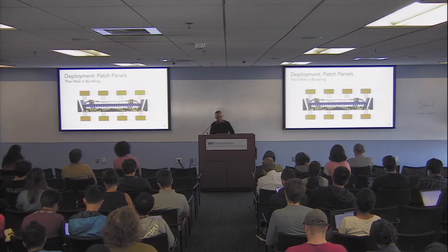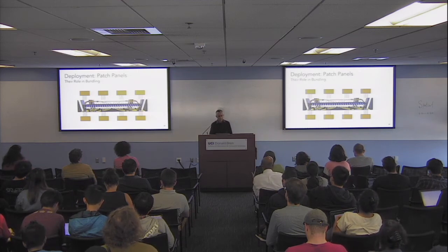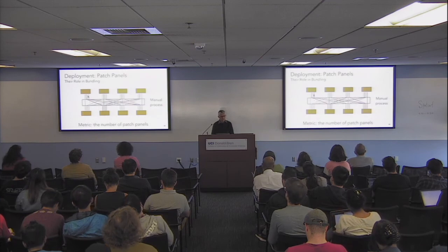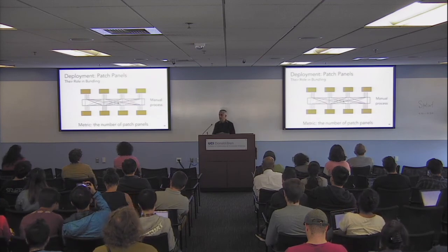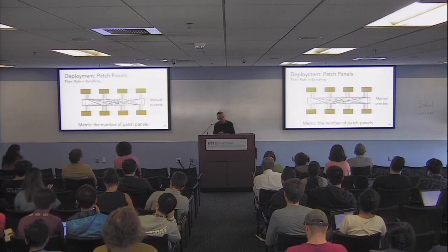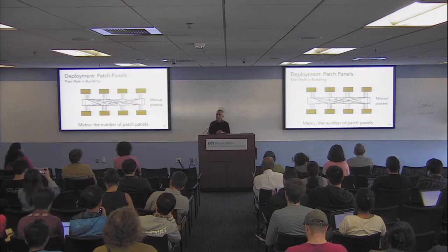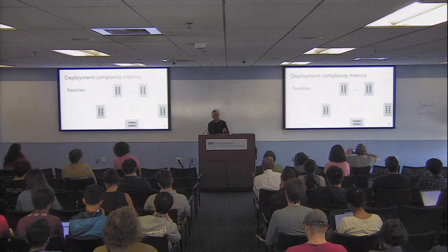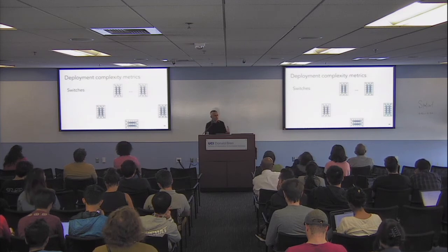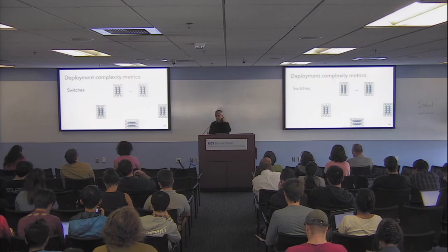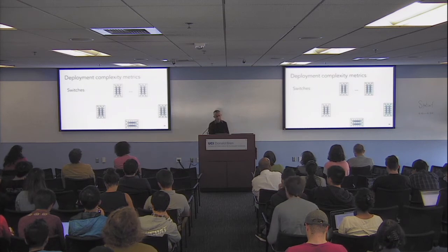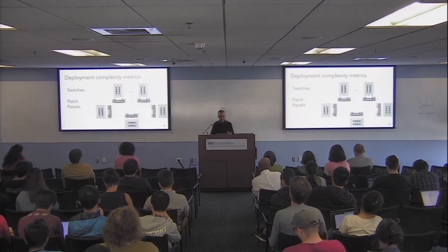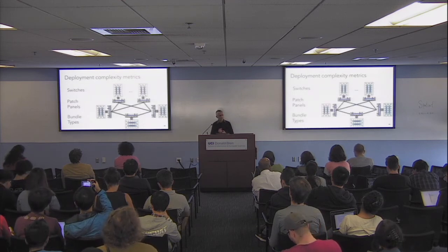This device in between is called a patch panel — it lets you connect ports and wire them any way you want. So another measure of the complexity of managing the network is the number of patch panels. When you actually build a network, the complexity involves racks, number of switches, number of patch panels, and number of bundling types.